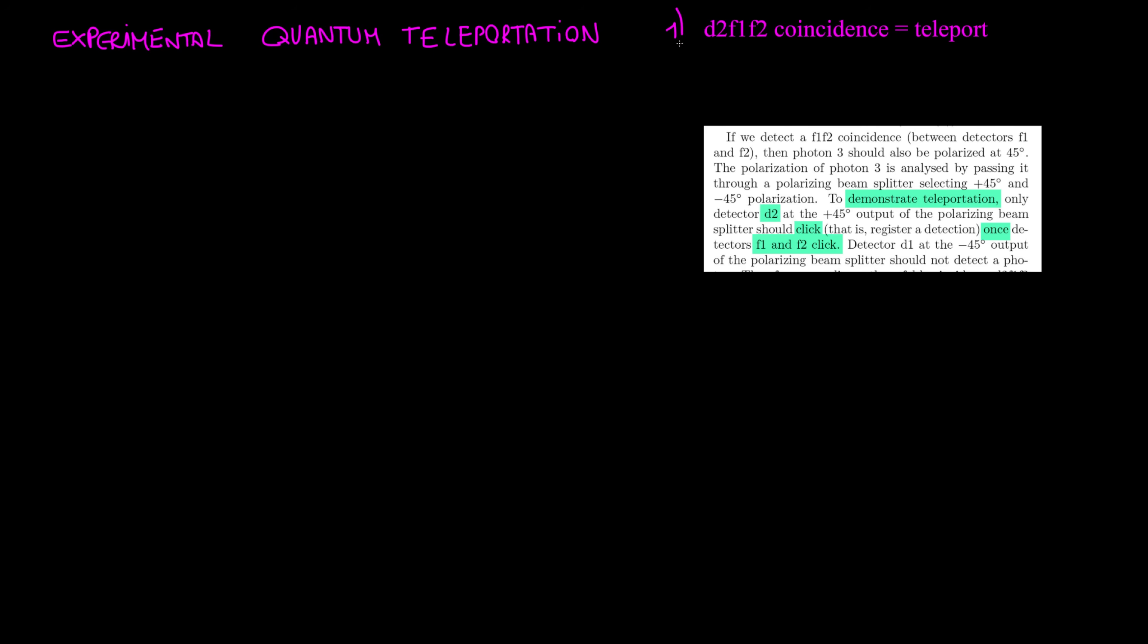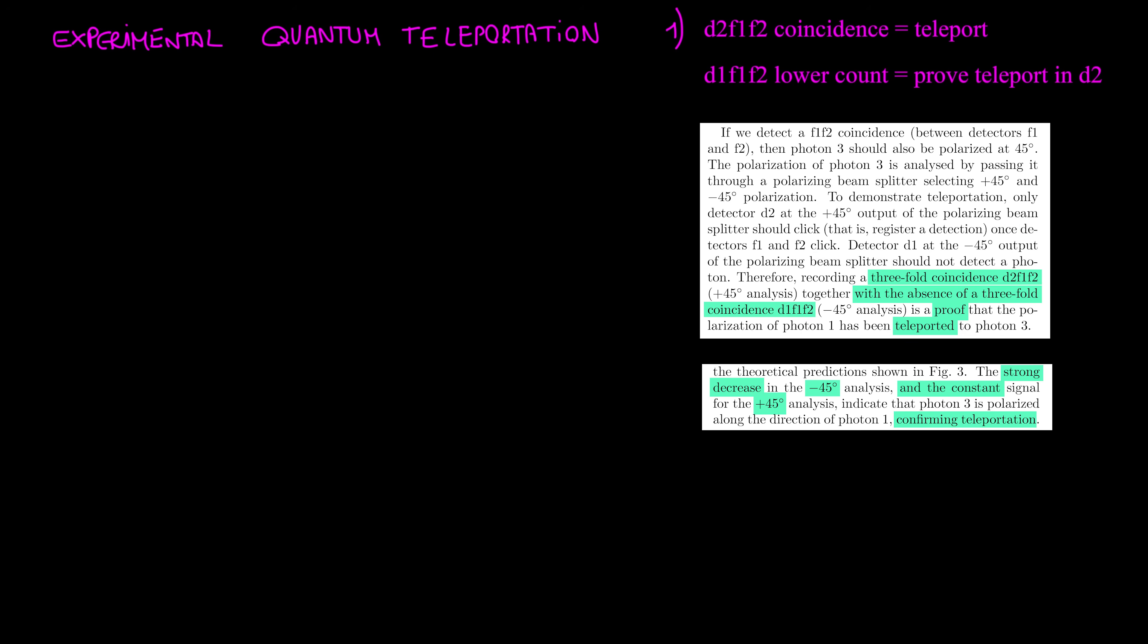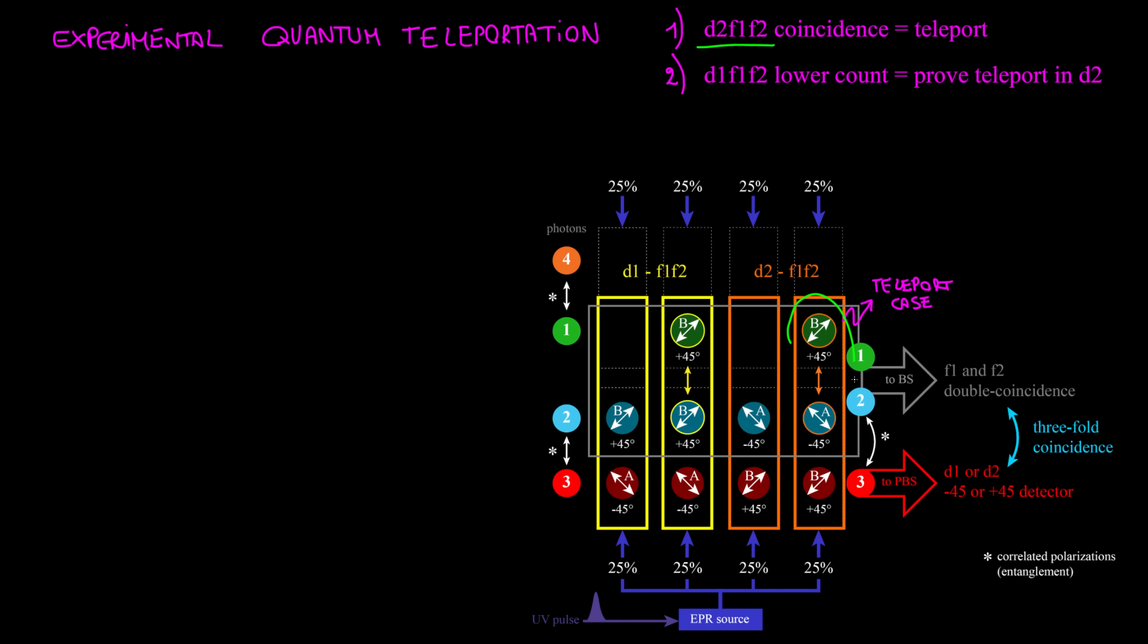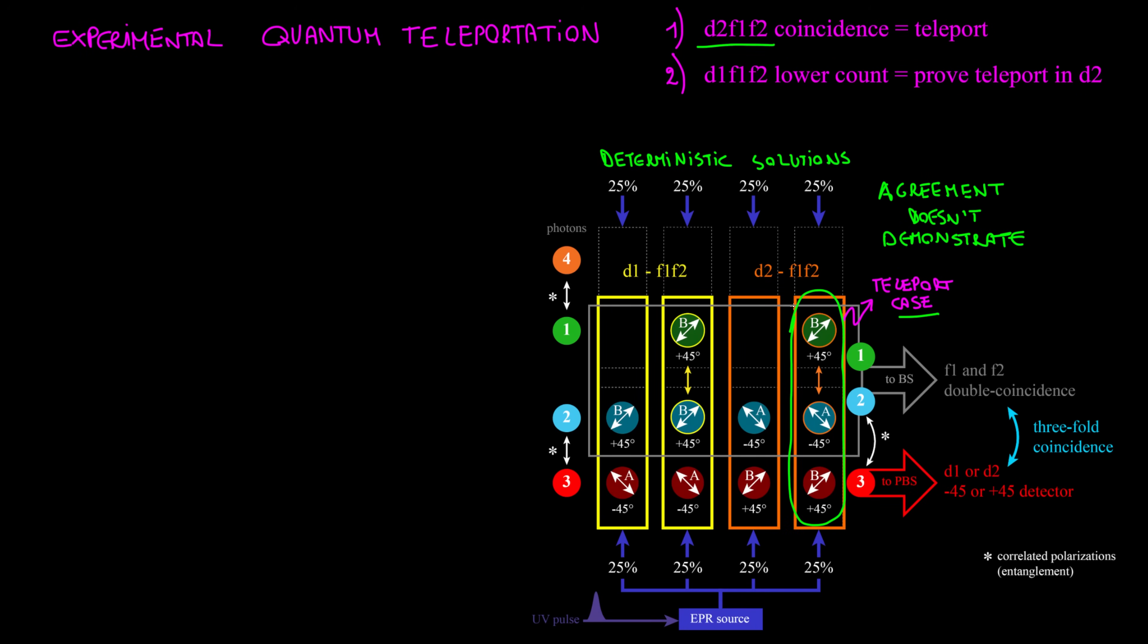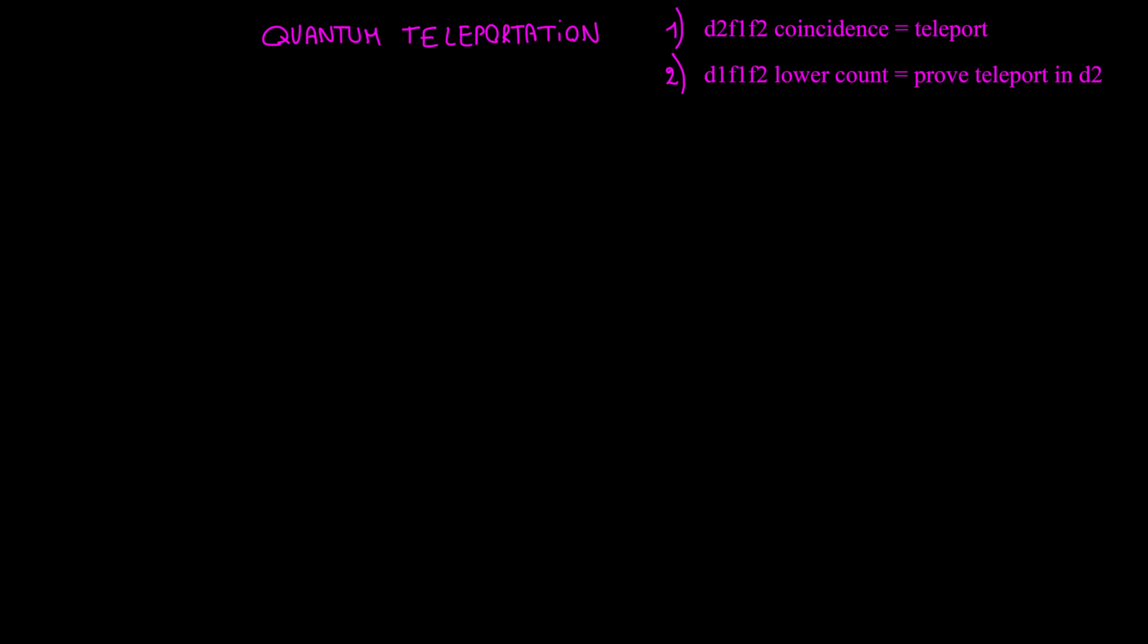The two statements of this experiment are: in D2 is quantum teleportation, and lower coincidences in D1 prove teleportation. These coincidences have more indistinguishable causes, and the state for teleport is just one of deterministic solutions. Agreement doesn't demonstrate that this threefold coincidence is thanks to the teleport of a polarization. Lower count on D1 outcomes can't prove the presumed teleport with D2, since they are independent facts. Anyway, we saw there is a reason and is not related to teleport.